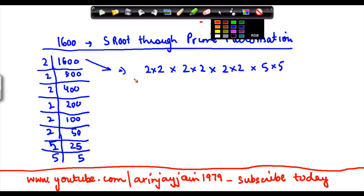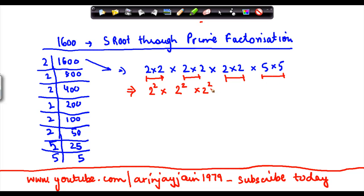But our idea is to find out the square root. We take these two, write it as 2 square, take these two, write it as 2 square, take these two, write it as 2 square, take these two and write it as 5 square.